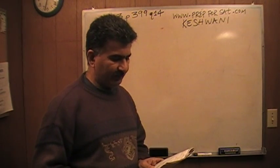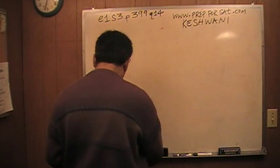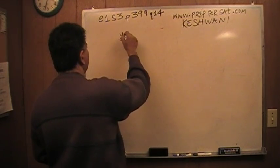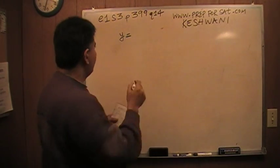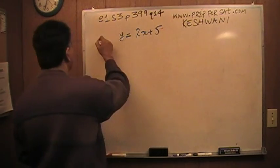It says in the xy plane, the equation of the line L is y = 2x plus 5. So we're dealing with a line which has an equation of 2x plus 5. They're calling it line L.